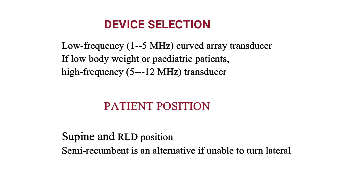For adults we use a low frequency probe, and in pediatric patients with weight less than 40 kg you can use a high frequency probe. The patient position would be supine or right lateral decubitus. The right lateral decubitus position is preferred because of gravitational drainage of gastric contents to the antrum, which increases sensitivity to detect small volumes. This position may be difficult in critically ill, trauma, or pregnant patients, but a semi-recumbent position can be used.